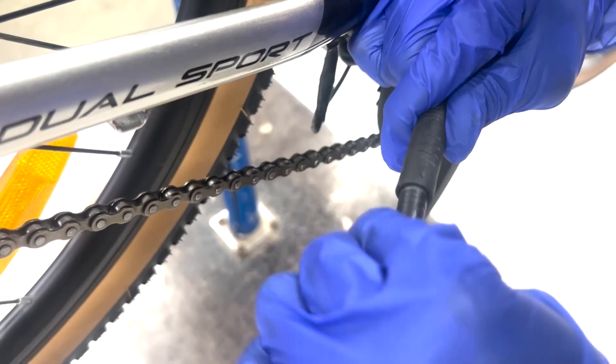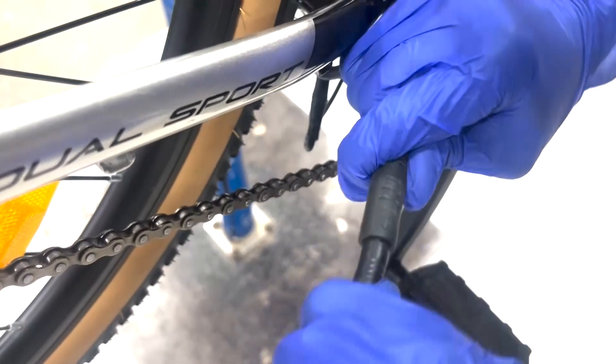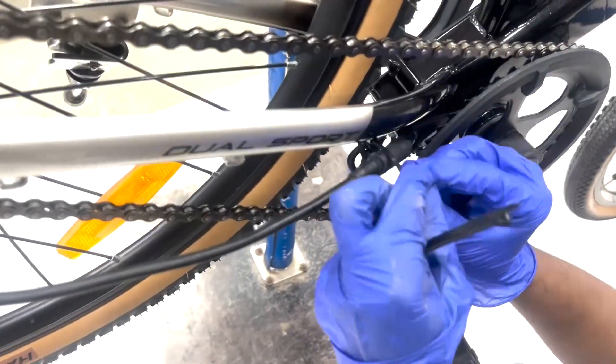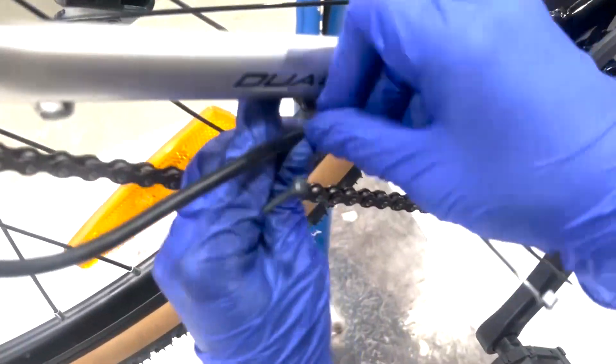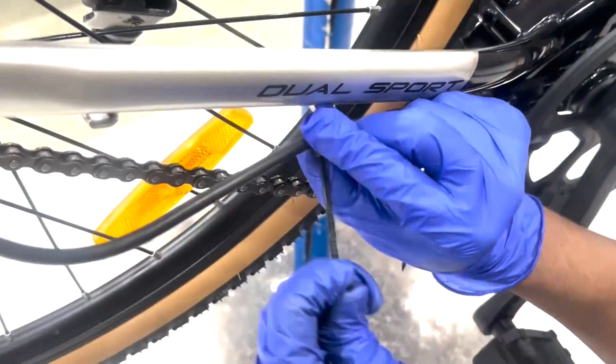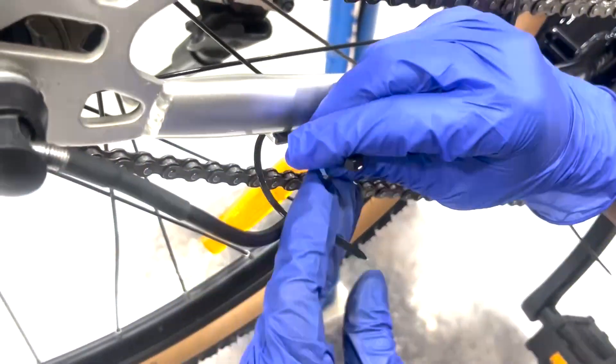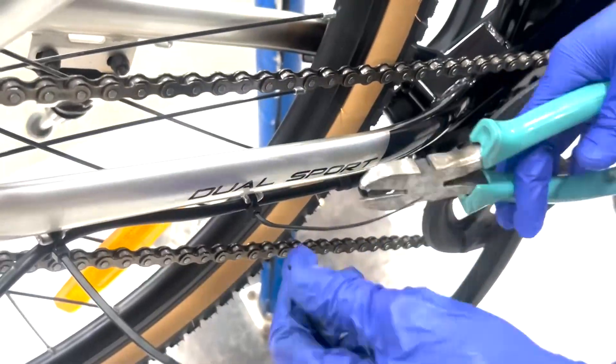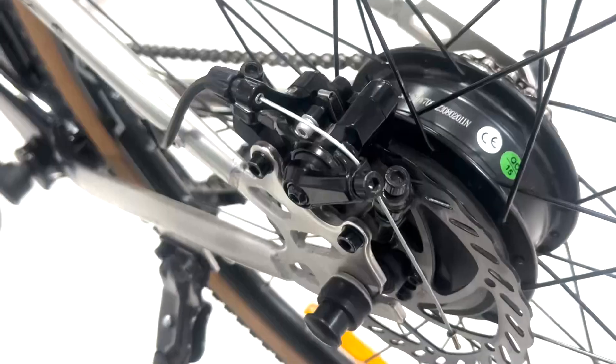Connect the 9-pin motor connector, ensuring the arrows align, and secure the motor wire with cable ties. Cut any excess cable ties.